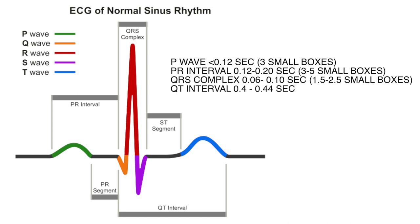The Q is in orange, the R is in red, the S is in purple — making the QRS, which normally measures 0.06 to 0.10 seconds, about 1.5 to 2.5 small boxes. The ST segment is in gray and begins at the end of the S-wave and ends before the beginning of the T-wave. In blue is the T-wave. The QT interval spans the beginning of the Q-wave to the end of the T-wave.